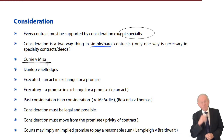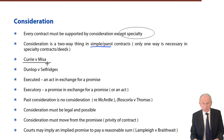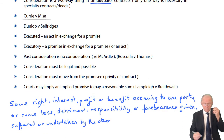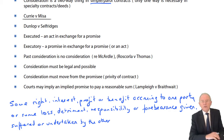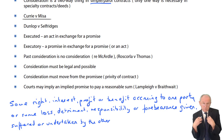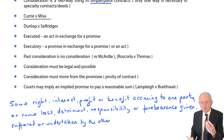Currie v Misa is an 1875 case — the case name and year are not important. Currie v Misa defined what is meant by consideration. The definition is: some right, interest, profit, or benefit accruing to one party; or some loss, detriment, responsibility, or forbearance given, suffered, or undertaken by the other. We can reduce this to say that consideration is something of value.